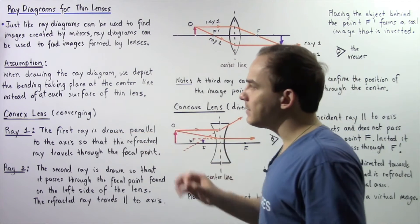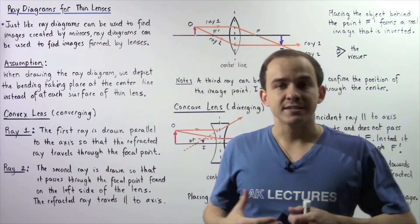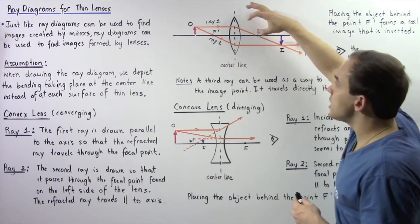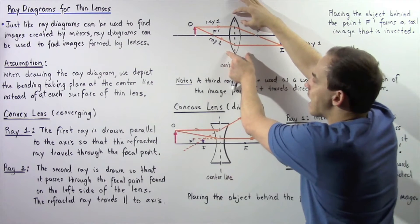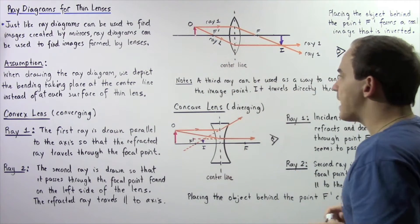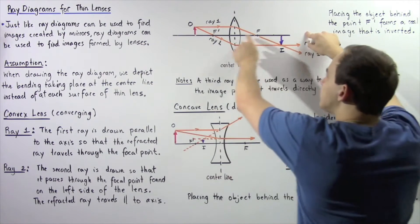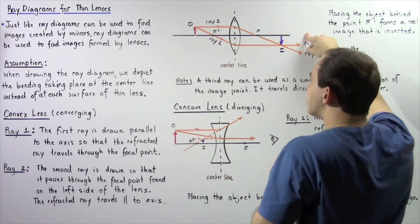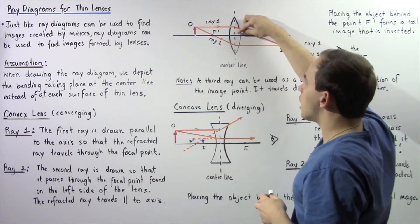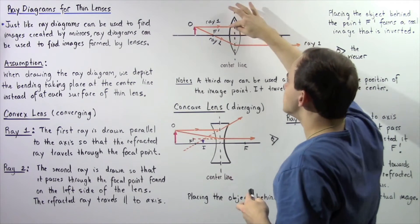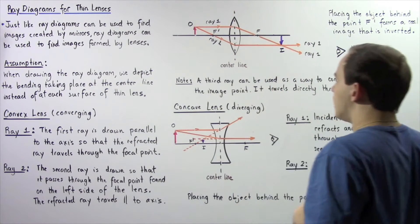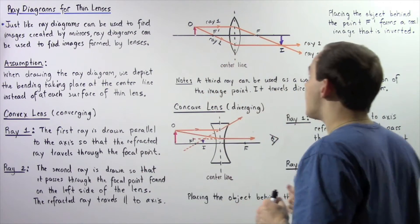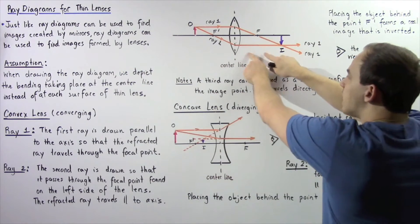Let's begin by examining convex lenses. Convex lenses, also known as converging lenses because they converge light, are essentially thicker at the center and thinner at the edges, as shown by the following double convex thin lens. The black line is our principal axis — it cuts our lens essentially in half, going through the center of the lens and perpendicular to both surfaces.